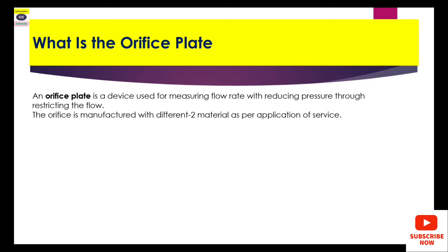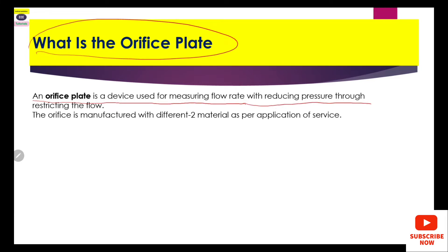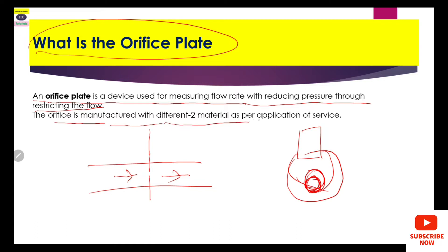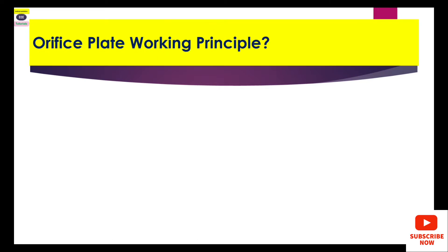Our first point: what is an orifice plate? An orifice plate is a device used for measuring flow rate by reducing pressure through restricting the flow. When we talk about its design, this is a pipeline and when a small hole is given where the fluid is passing through — that hole is the orifice. The orifice plate is manufactured with different materials as per application, because some services are congealing, acidic, or caustic where standard materials cannot be used.